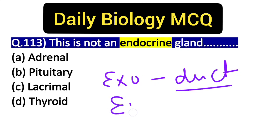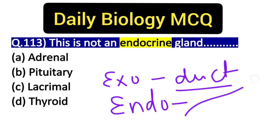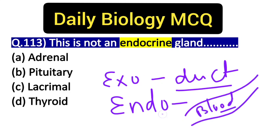If you ask how endocrine glands deliver their secretions to the target organ, the answer is through blood. That means endocrine glands pour their secretions directly into the blood vessels.